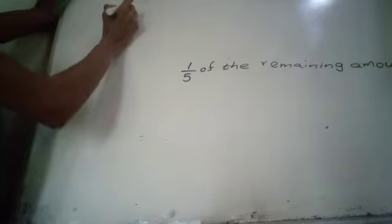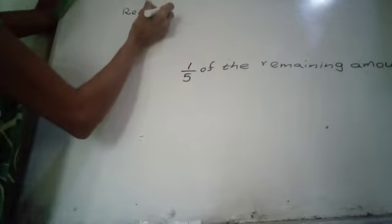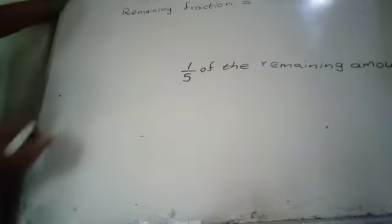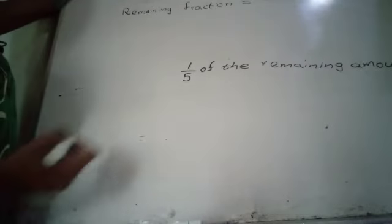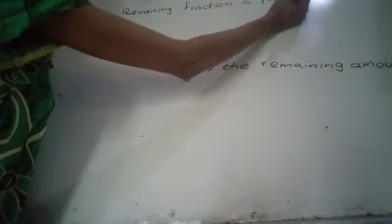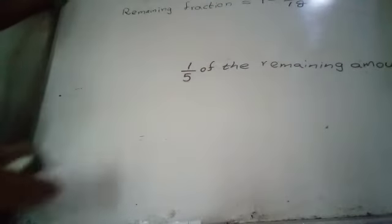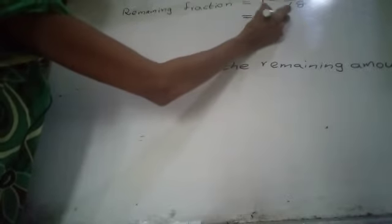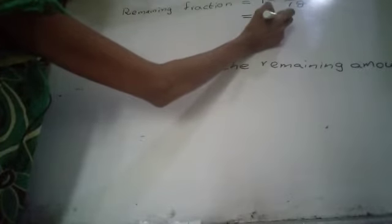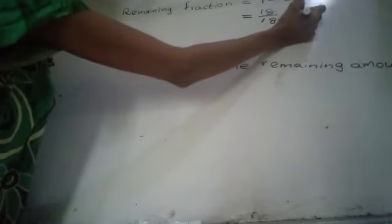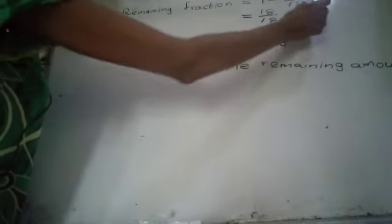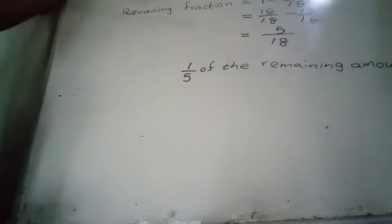First we find the remaining fraction. The remaining fraction is equal to 1 subtract 13 over 18. Here the denominator is 18, so we convert 1 to a fraction with denominator 18, which equals 18 over 18. Then 18 over 18 subtract 13 over 18 equals 5 over 18.